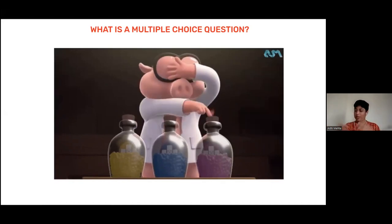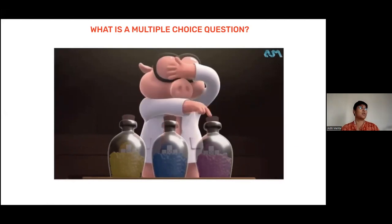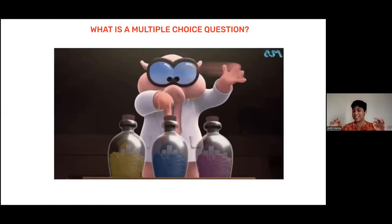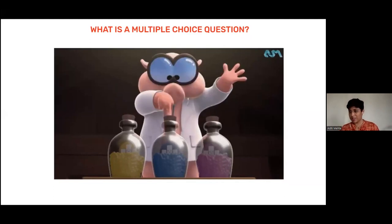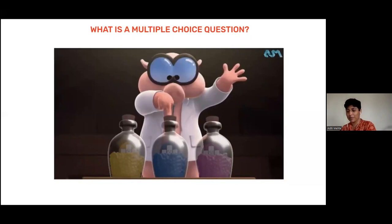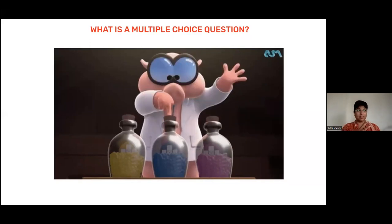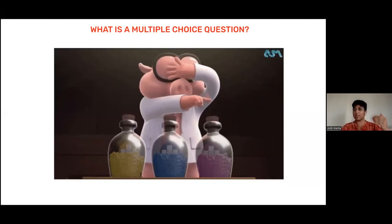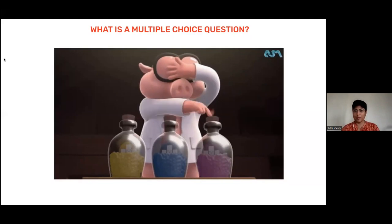Behind an MCQ that you see on a computer screen, a phone, or printed in a booklet in front of you, is a notoriously difficult process of creation. There are 11 or 12 steps in a checklist that we have to go through while creating multiple choice assessments, to make sure that a question that actually tells us something about the child gets put on the paper.